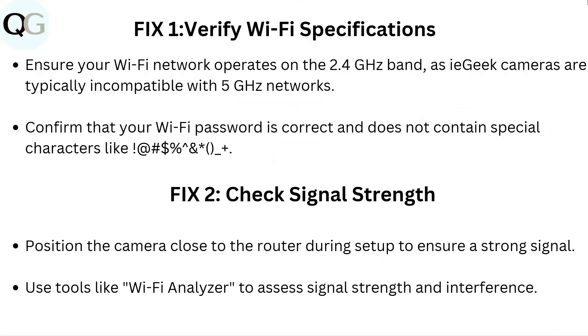Fix 2: Check signal strength. Position the camera close to the router during setup to ensure a strong signal. Use tools like Wi-Fi Analyzer to assess signal strength and interference.